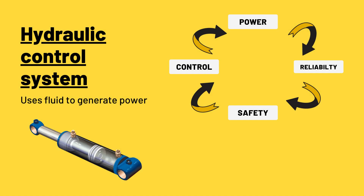Next in the line is the hydraulic control system. This type of control system uses fluid to generate power or energy. Hydraulic systems can be found in everything from cars to industrial machinery. They are designed to provide power, control, safety, and reliability.